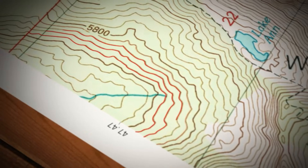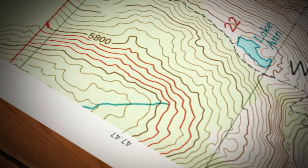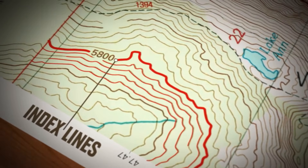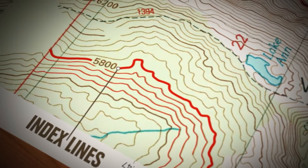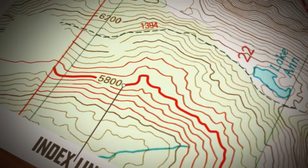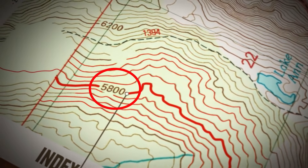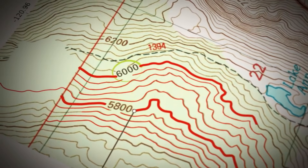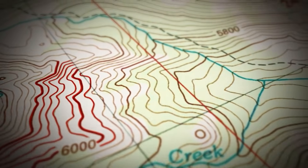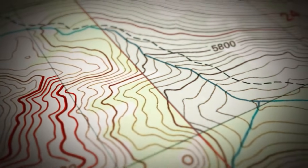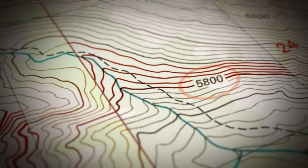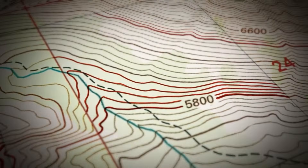When looking at the contour lines, you want to pay close attention to the index line. These are specific contour lines that are labeled with their elevation value. They appear on the map at regular intervals to help the map reader quickly identify the elevation, and are usually drawn thicker and darker compared to regular contour lines.